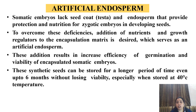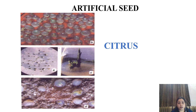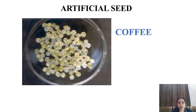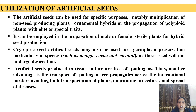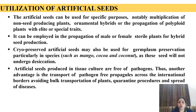This addition of artificial endosperm results in increased efficiency of germination and viability of encapsulated somatic embryos, so it can be kept for a long duration. These synthetic seeds can be stored for a longer period of time, even up to 6 months without losing viability, especially when stored at 4 degrees centigrade temperature. These are artificial seeds of citrus and artificial seeds of coffee.